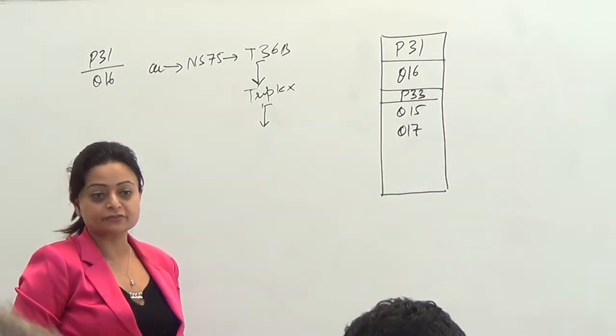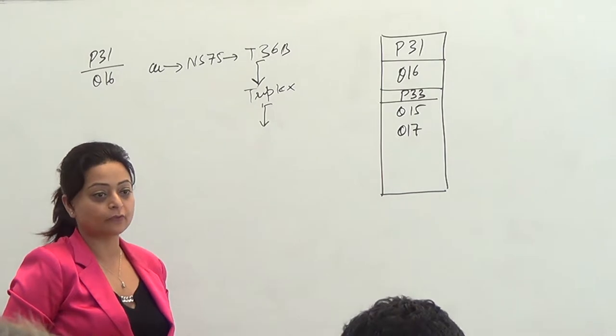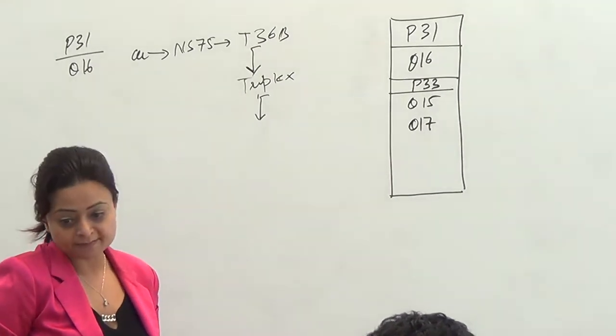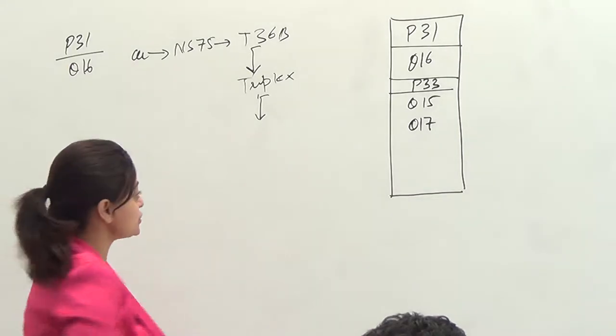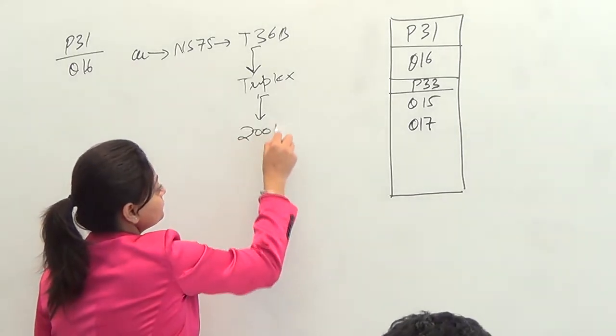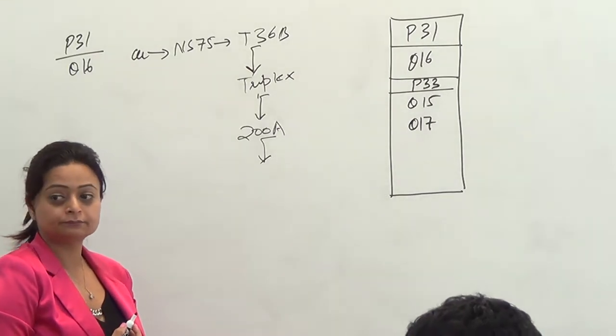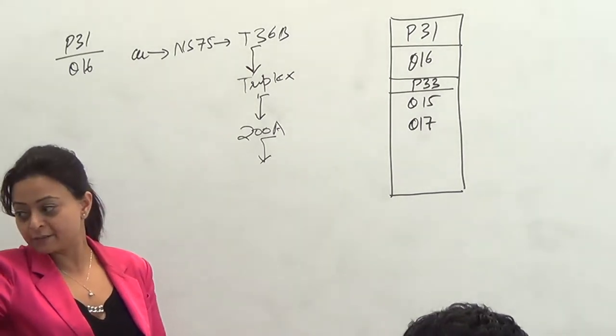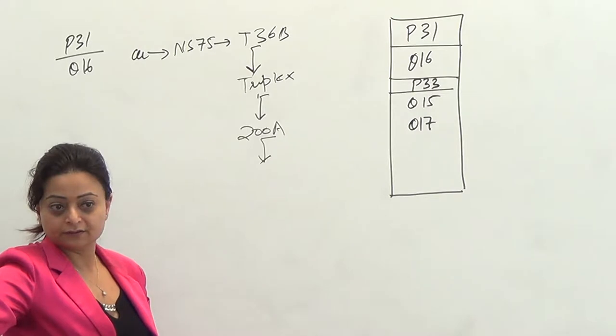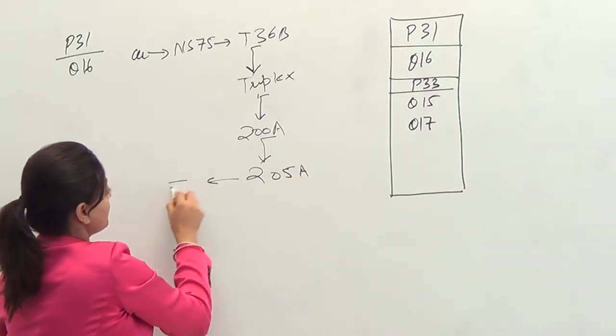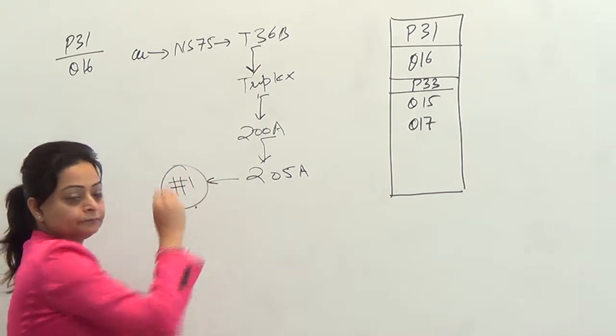He didn't say in the question 120 volt single-phase system. 120/240 is two phases, one neutral, which is what? A triplex. So, ampacity is 200 amps given. Under 200 amps, what's my closest match? Which is referring to how many amps? 205. That refers to? Number one. Good job. Done.